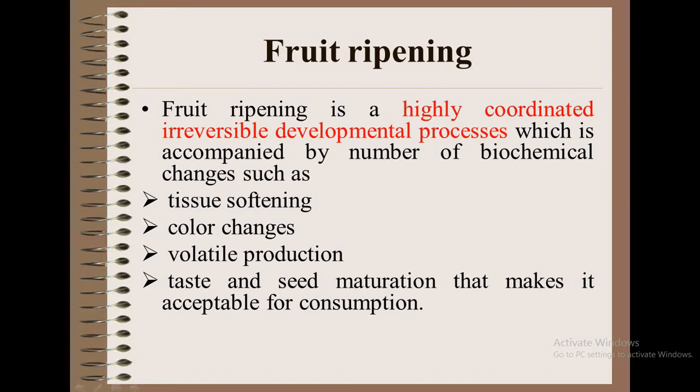Fruit ripening is a highly coordinated, irreversible developmental process which is accompanied by a number of biochemical changes such as tissue softening, color change, volatile production, taste, and seed maturation that makes it acceptable for consumption.